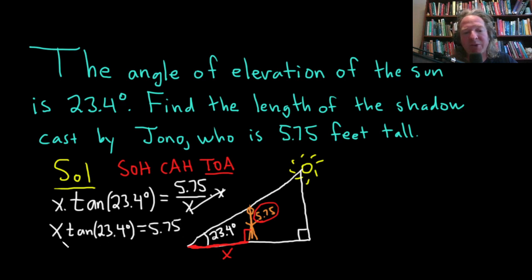To finish solving for X, we simply divide by the tangent function. Divide by the tangent of 23.4 degrees on both sides. These cancel, and so X is all of this.